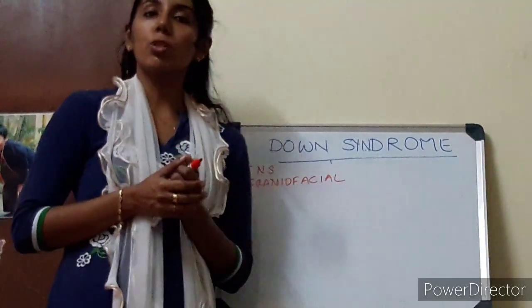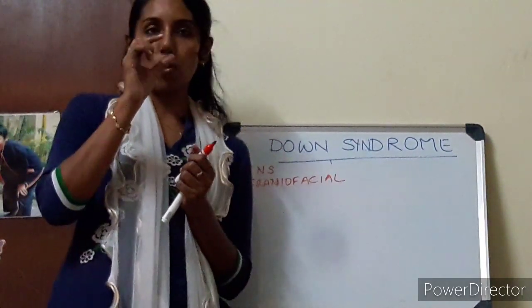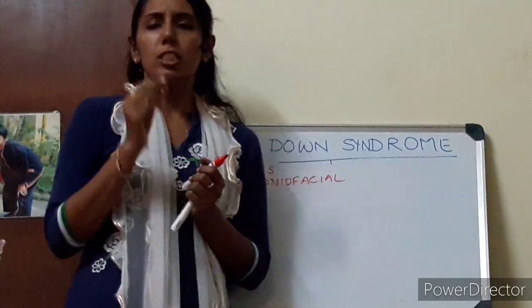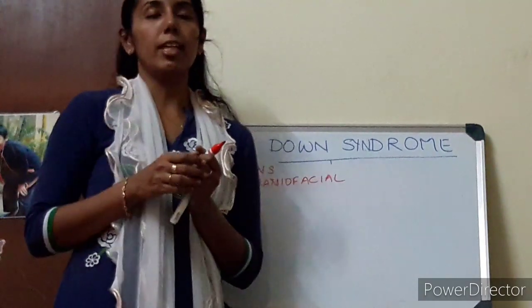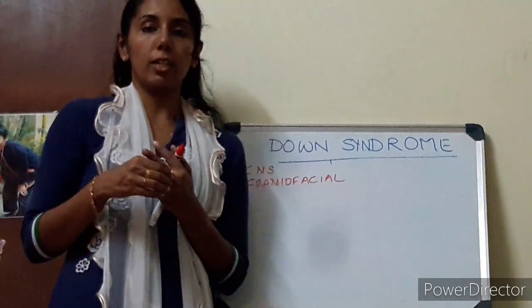When you see the mouth, they tend to have a small, short hard palate, small teeth, and also a furrowed tongue.